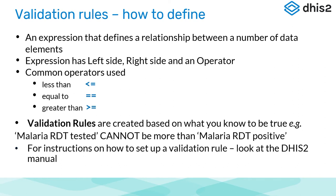How do we define a validation rule? We use the term an expression. An expression is a relationship between a number of data elements that talk to each other. This validation rule expression has a left side, a right side, and in the middle we have an operator. Some of the common operators used are less than or equal to, equal to, or greater than or equal to.